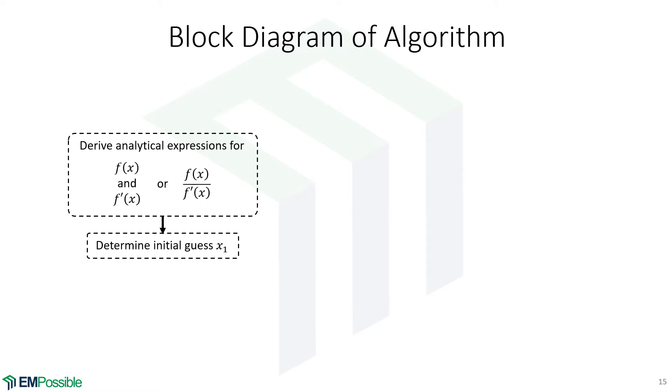The next thing we need to know before entering the algorithm is our initial guess. Maybe this comes from knowledge of the physics of the problem, maybe we've plotted it and we have some sort of rough guess, but somehow we've come up with an initial guess that we are calling x1.